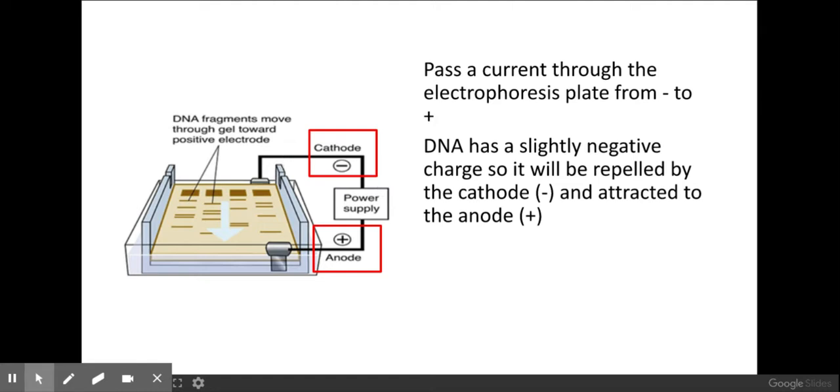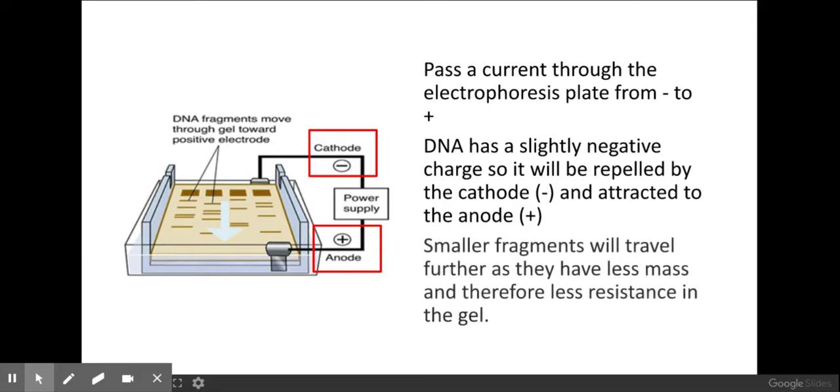Now as a result of the electric current being passed through the gel, the DNA fragments are going to be separated out due to the mass of the DNA. Those smaller fragments are going to pass easier through the gel. The ones with the smaller mass are going to end up more towards the anode, and the reason why they'll pass further through the gel is because they're going to have less resistance.